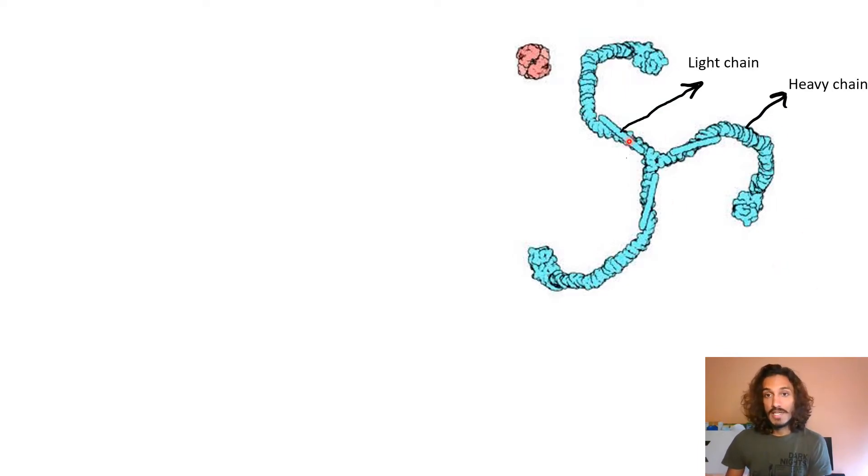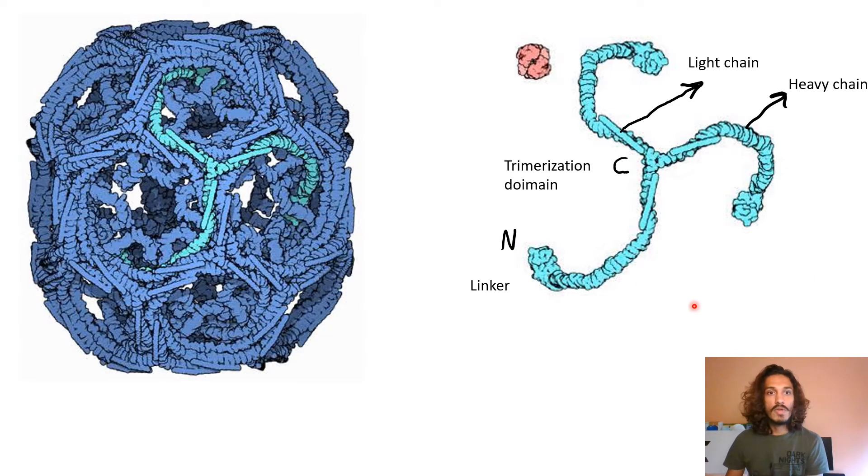Now it has a light chain and you can see over here a heavy chain. There is a C-terminal and an N-terminal in the amino acid sequence, and the C-terminal is where the trimerization domain is present. With the help of it, it forms this triskelion-like structure, and at the N-terminal we have linker molecules that help them connect amongst each other to form the whole lattice network.